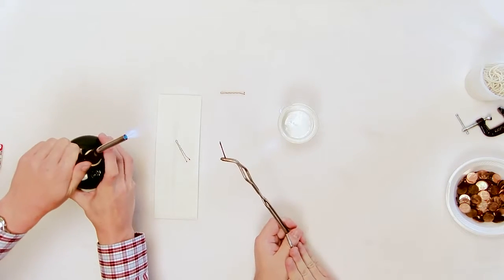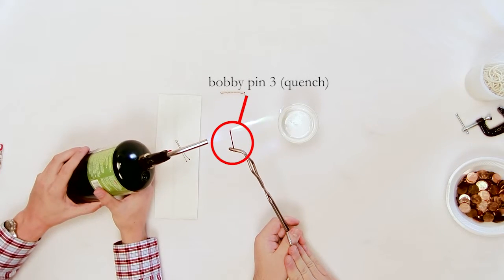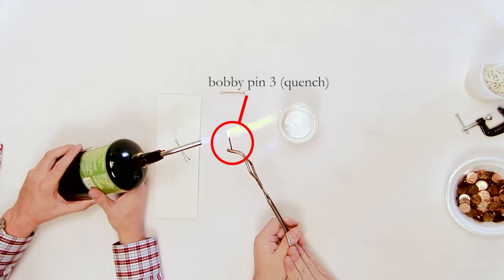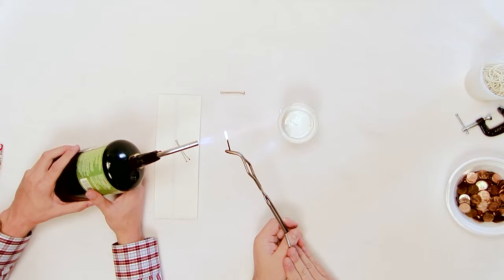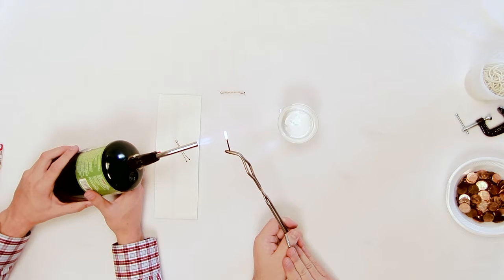Heat another bobby pin. Place the looped end in the flame, heating the loop at about 1 third of the pin. The pin should again be kept in the flame until glowing hot for 20 to 25 seconds.